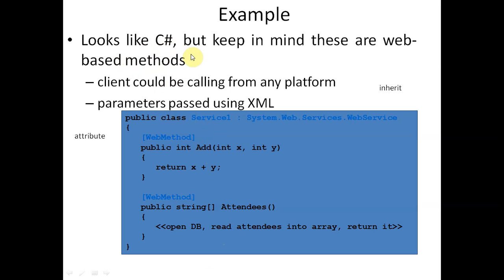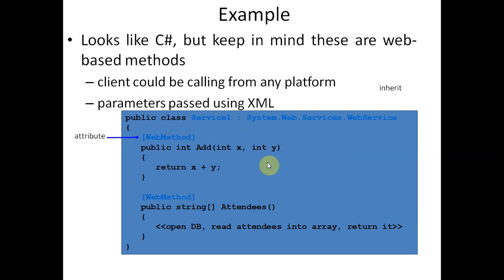The programming looks like C# because it is part of C# programming. Keep in mind these are web-based methods, and a client could be calling them from any platform. The [WebMethod] attribute defines that this is a web service method. Parameters are passed using XML. I will show you in a diagram on the next slide how parameters pass through XML and the complete process in web services.